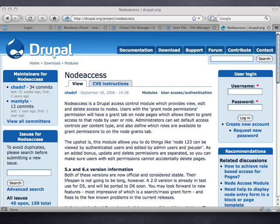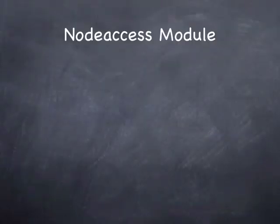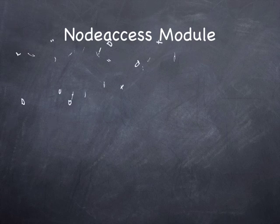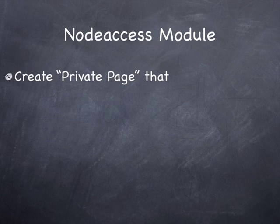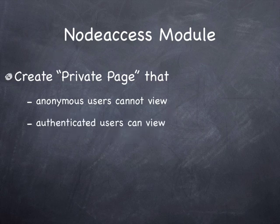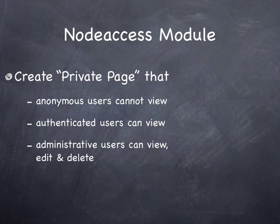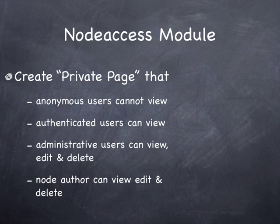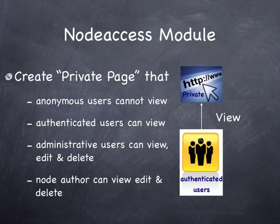We're going to show you a scenario where we're trying to create a private page — a hidden page from visitors to your website. Only people who log in will be able to see this page. The anonymous user, or guest or visitor, will not be able to view it. The authenticated user, or members of the community who log in, will be able to view it. Administrators will have view, edit, and delete privileges, as will the node author. We're creating a community where logged-in users can view content but guests cannot.